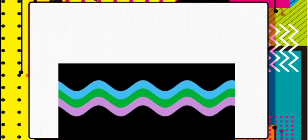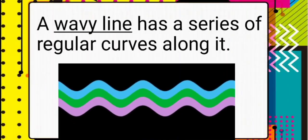A wavy line has a series of regular curves along it. Here is our example of wavy lines.